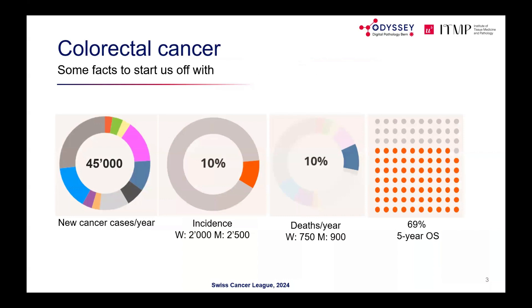Focusing on colorectal cancer, Switzerland sees about 45,000 new cancer cases per year, with approximately 4,500 being colorectal cancer — representing 10% of all new cancer diagnoses. Colorectal cancer also accounts for 10% of all cancer deaths in Switzerland.